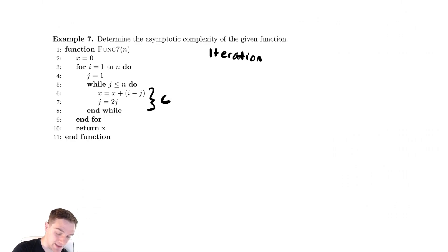And our variable this time, we need to be careful, is j for the while loop. We only create the iteration table for the while loop.